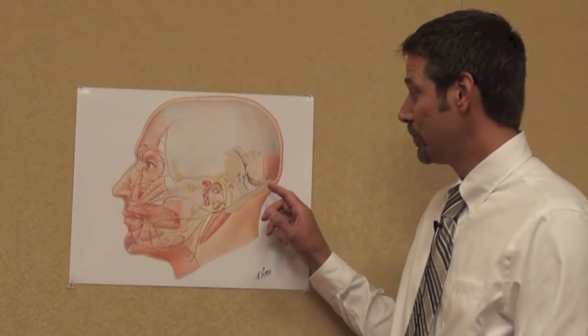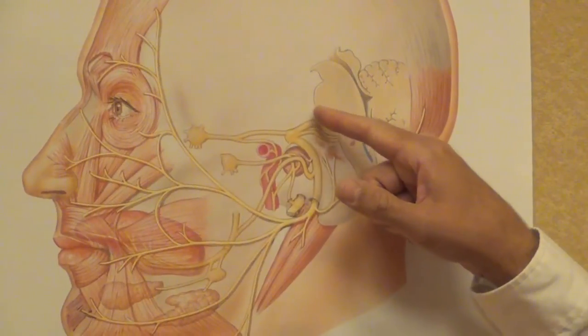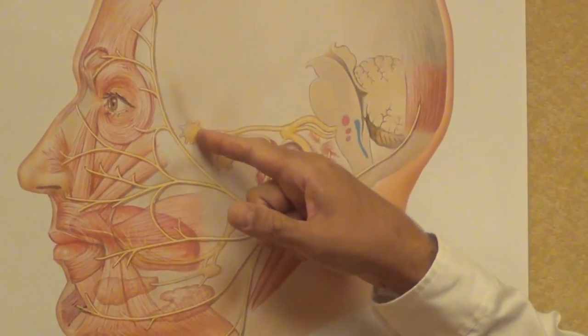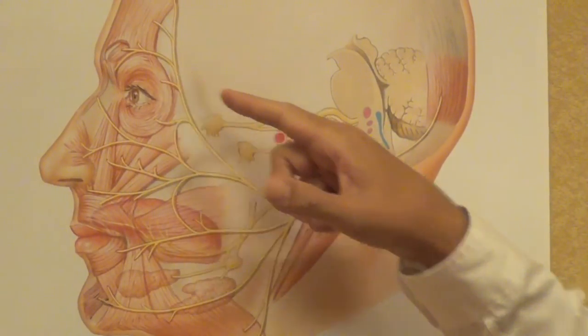If we take a look at Cranial Nerve 7, Dr. Netter does a beautiful job of showing how Cranial Nerve 7 comes off the brainstem, and he shows all the major contributions going up through here to the pterygopalatine ganglion and then up into the eye.